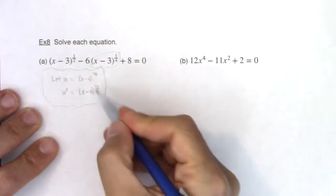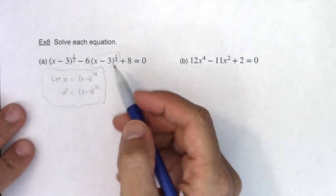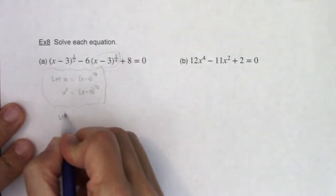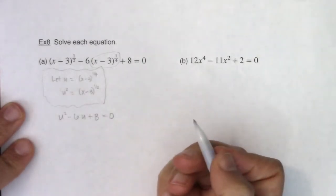And as long as these exponents line up with the ones you're given, you can use this method. So I can rewrite this equation with just u's in it, and I get u squared minus 6u plus 8 is equal to zero. Great.